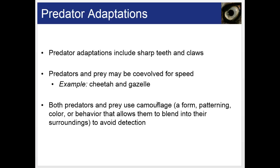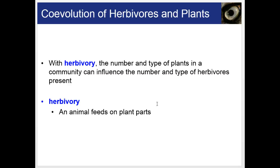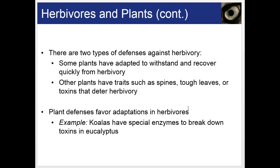Predator adaptations include sharp teeth and claws. Predators and prey may co-evolve for speed, like the cheetah and the gazelle. Both predators and prey use camouflage — a form of patterning, color, or behavior that allows them to blend into their surroundings to avoid detection. With herbivory, the number and type of plants in the community can influence the number and type of herbivores present. Some plants have adapted to withstand and recover quickly from being eaten, while others have spines, tough leaves, or toxins to deter herbivores. Plant defenses favor adaptations in herbivores — for instance, koalas have special enzymes to break down the toxins in eucalyptus plants.